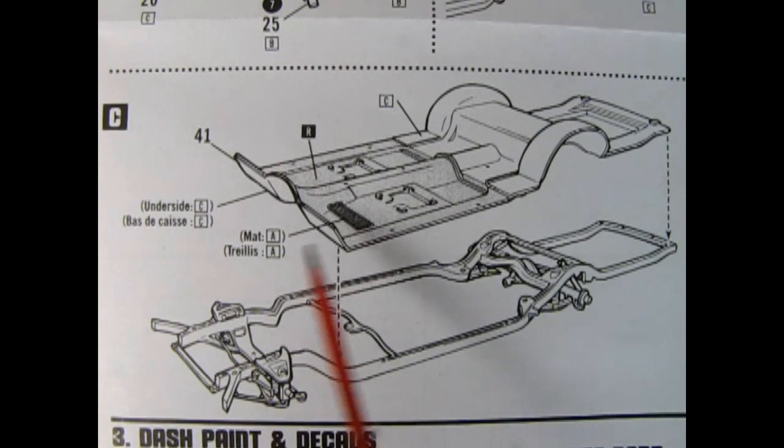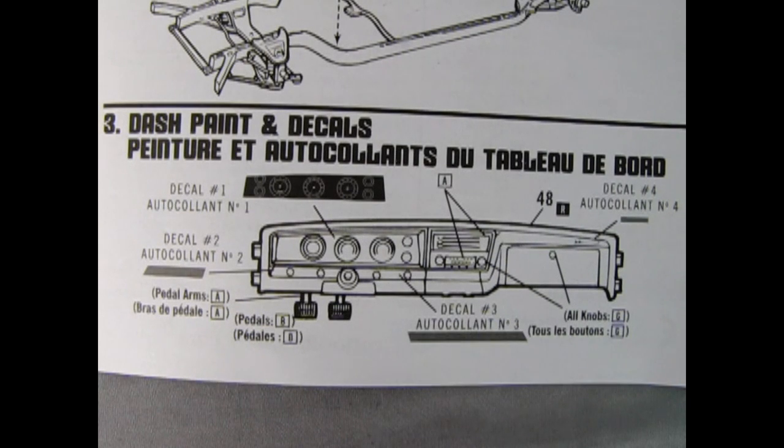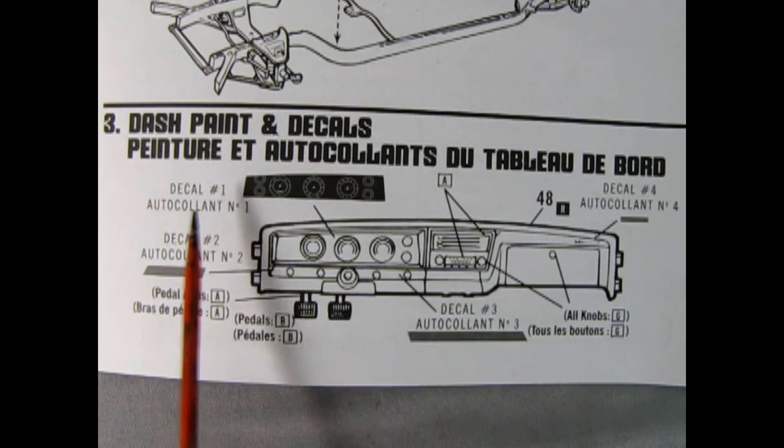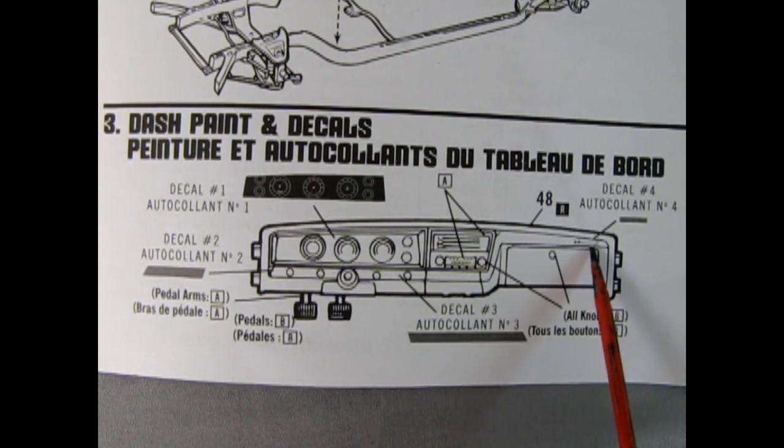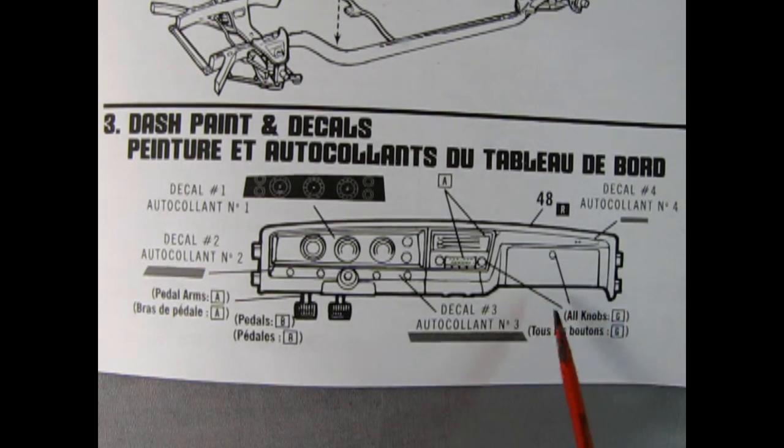Panel C shows our floor pan being installed on top of the completed frame. Step three, dash paint and decals. Here in panel three we have a decal guide for our dashboard. Here you can see the gauges being installed as well as some of the wood trim. We also have the Impala decal going on the top of the dashboard and it says to paint all knobs silver and we also have our pedals being painted down below.